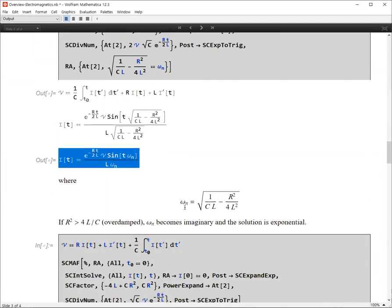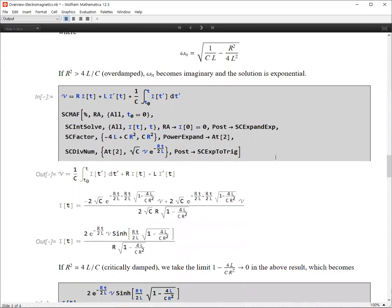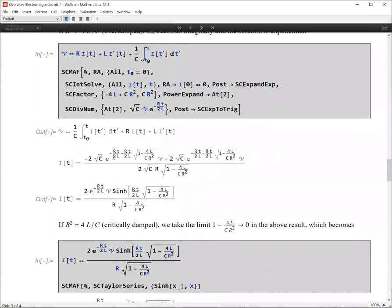And omega_n, this is the resonance frequency, which is slightly less than 1 over the square root of LC resonance frequency. Well, when R is large, then this is an overdamped case. And then omega_n becomes imaginary and the solution is exponential. And the solution is, you can see, we have two independent solutions.